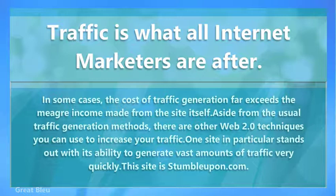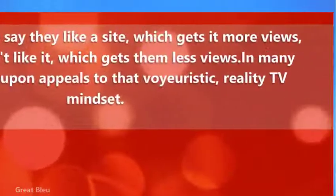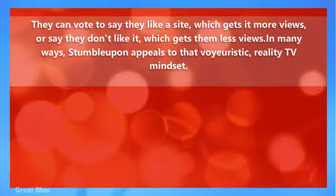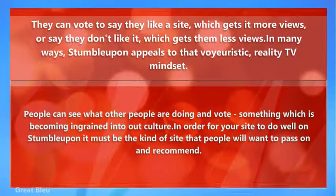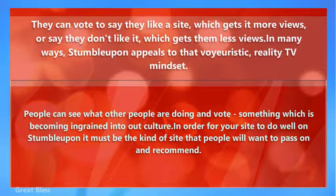One site in particular stands out with its ability to generate vast amounts of traffic very quickly. This site is StumbleUpon.com. Users can vote to say they like a site, which gets it more views, or say they don't like it, which gets it fewer views. In many ways, StumbleUpon appeals to that voyeuristic, reality TV mindset — people can see what other people are doing and vote, something which is becoming ingrained into our culture.